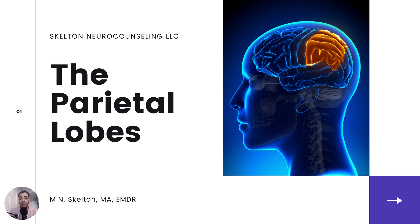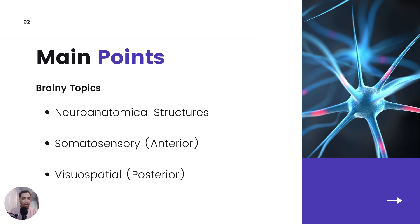The parietal lobe is where the primary somatosensory processing takes place — it's a $50 word for sensation, so like pain, touch, temperature, and all that good stuff anywhere on the body is processed here. Also, visuospatial processing takes place — I call this the spa of the brain. It's located posterior to the central sulcus, which is just a major fissure or dividing line in the brain, and lies in between the frontal and the occipital lobes. The main points we're talking about today are the neuroanatomical structures, the anterior zone where most of the somatosensory processing takes place, and the posterior zone where all the visuospatial processing takes place.